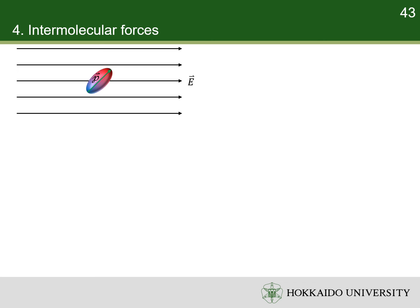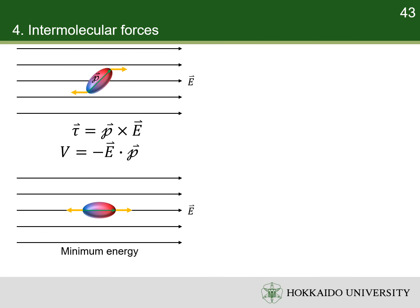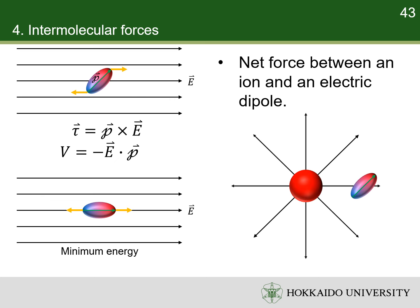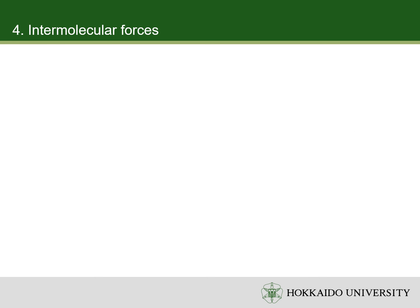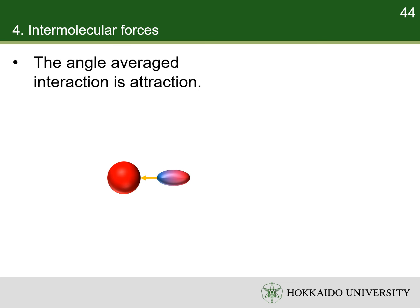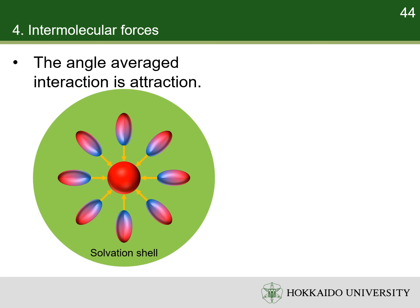An electric dipole interacts with an electric field as well. The dipole is subject to a torque in an electric field and has an electrostatic potential energy. The potential energy minimizes when the dipole is parallel with the field. In a non-uniform field generated by an ion, a dipole usually receives a net force since the force on one end of the dipole does not balance that on the other end. When the dipole is parallel with the field generated by a point charge, the net force is an attraction towards the ion. An important example of this interaction is the solvation of ions in polar solvents. The polar solvent molecules surround themselves around ions to form a solvation shell and release energy. When an ion moves through the solution, it tends to take its solvation shell with it.